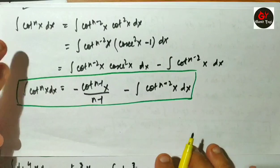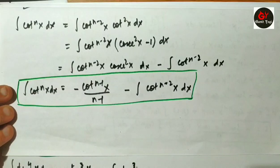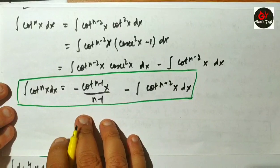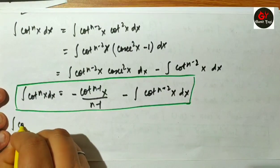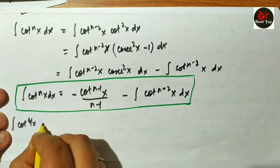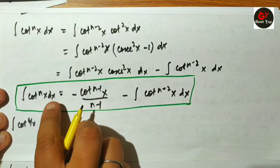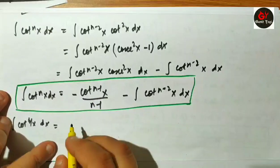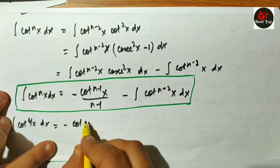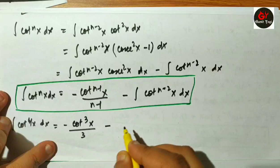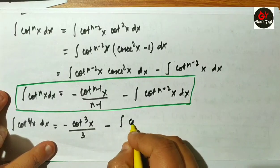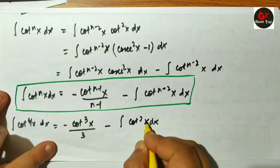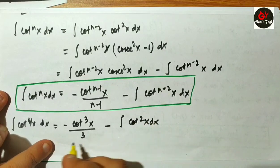Now let us solve a problem. The application of this formula is very easy. I will integrate cot to the power 4(x) dx. Applying the formula and putting n equal to 4, I get minus cot cubed x divided by 3, minus integration of cot to the power (n-2), that is cot squared x.